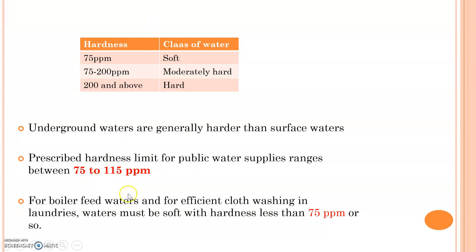The preferred range for water supply is generally 75 to 115 ppm. For boiler use, the water should be soft with less than 75 ppm hardness.